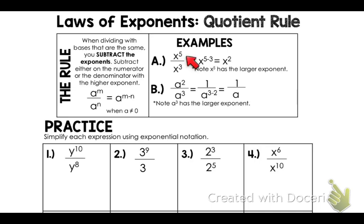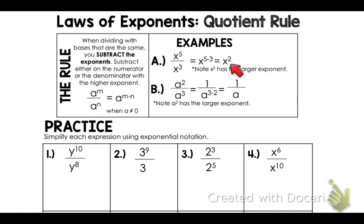For this one we have x to the fifth power over x to the third power. Pay attention — the fifth power is the larger exponent, so I'm going to do five minus three, which gives me a positive two. Because the five is at the top, that means my answer is going to stay at the top.